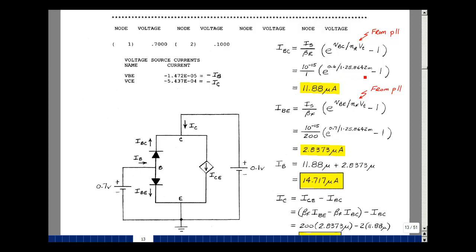I'll use the exact value at 27 degrees C, which is 25.8642 millivolts. I'd specify I sub s to be 1 femtoamp, that's 10 to the minus 15th, and beta r was 1. And I predict 11.88 microamps. That's the current in this diode.